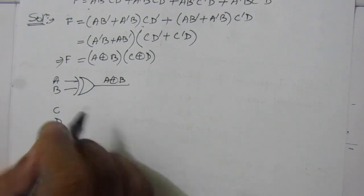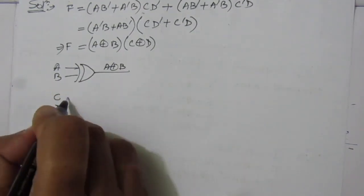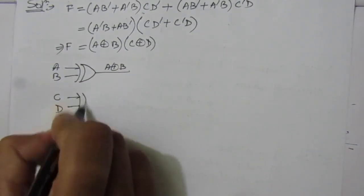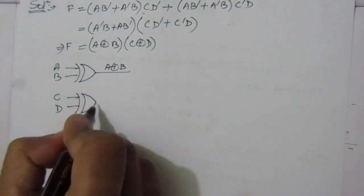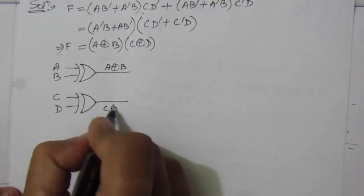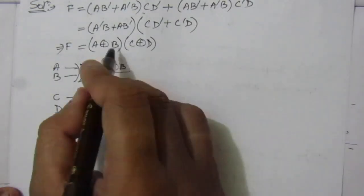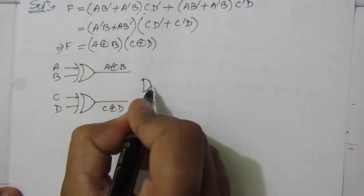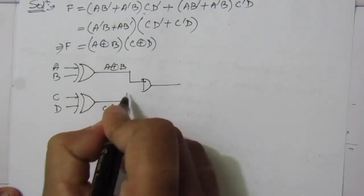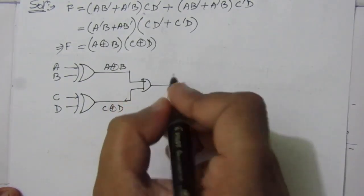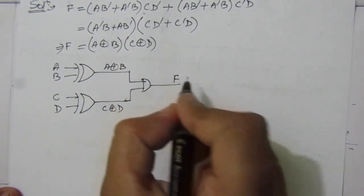Then we have C and D. These are the two inputs of an XOR gate, so we will get here C XOR D. Then we have to multiply these two. So we will use here an AND gate. And these will be the two inputs. So here we will get the function capital F.